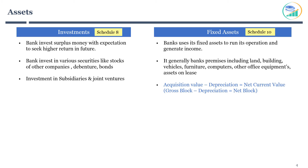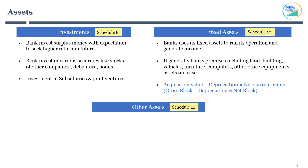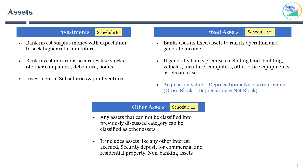The next line item is other assets, with details provided in Schedule 11. Any assets that cannot be classified into the previously discussed categories are classified as other assets. This includes assets like accrued interest, security deposits for commercial and residential property, non-banking assets, and so on.